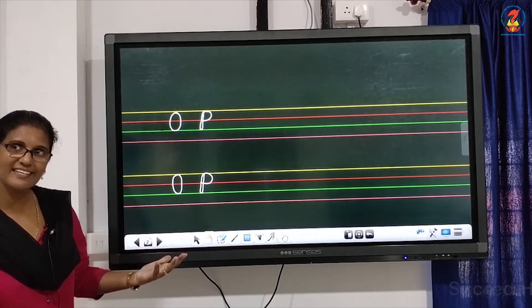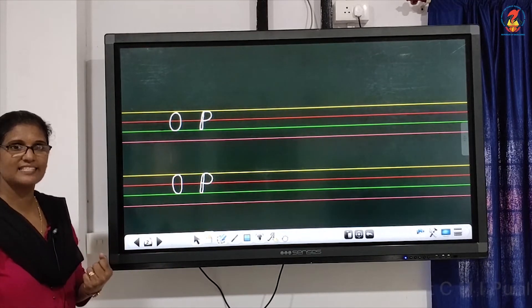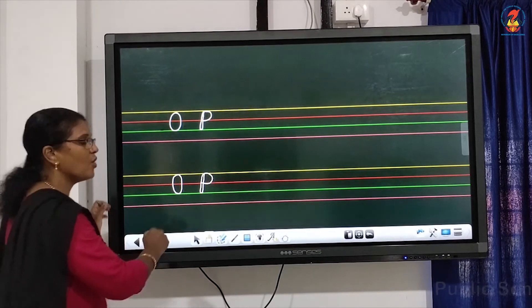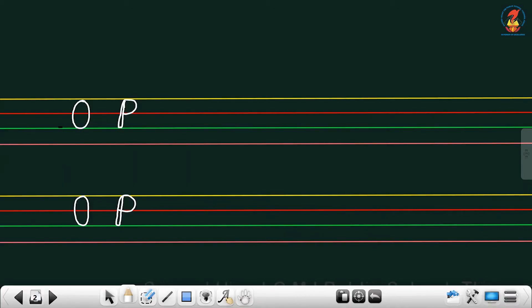What's the next letter? Yes, my dear children. Yes, that's right. O, P, Q. Q also looks similar to O. As you know, just write it like this and then put a small tail over here.